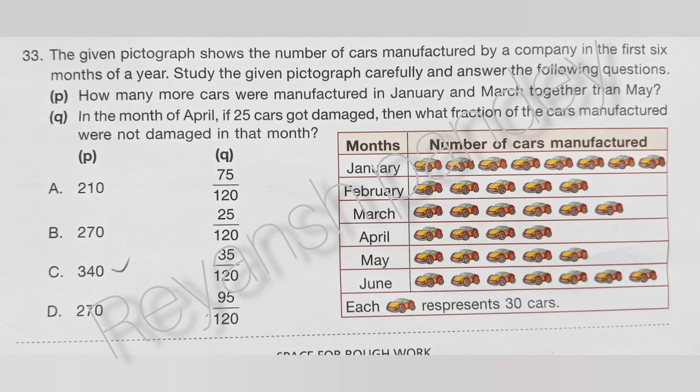In the month of April, if 25 cars got damaged, then what fraction of the cars manufactured were damaged that month? The answer is D — 95 divided by 120.